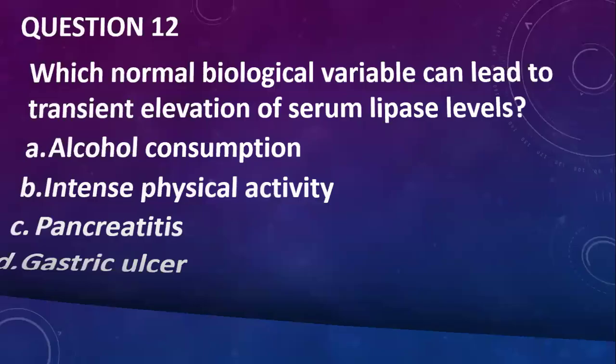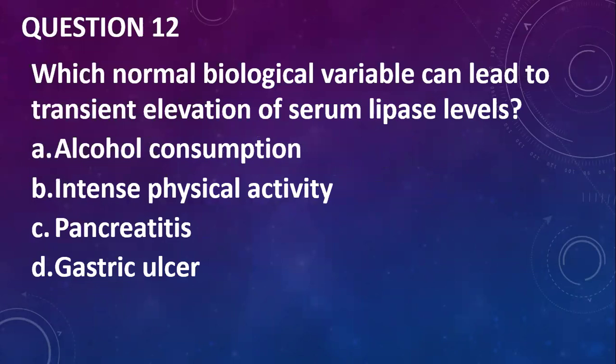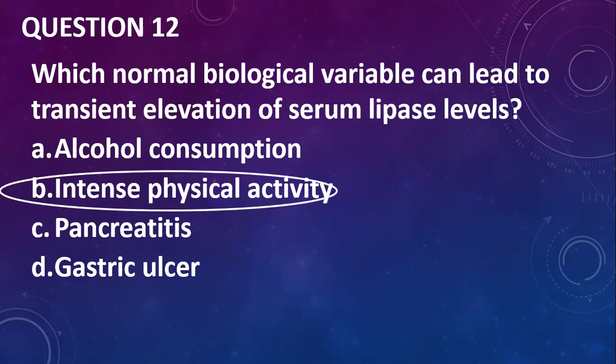Question twelve: which normal biological variable can lead to transient elevation of serum lipase level? You have alcohol consumption, intense physical activity, pancreatitis, and gastric ulcer. We'll go with intense physical activity because we are looking at a normal biological variable.